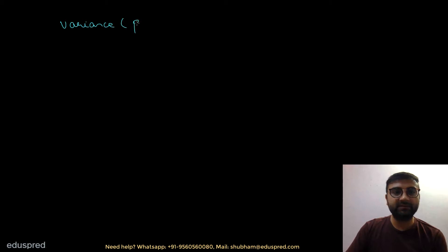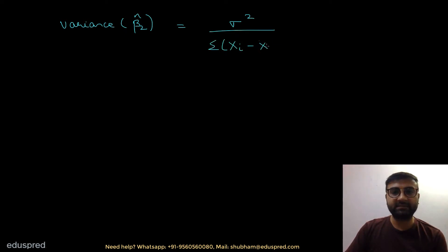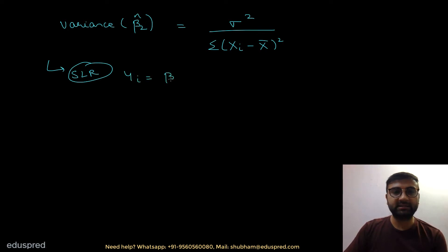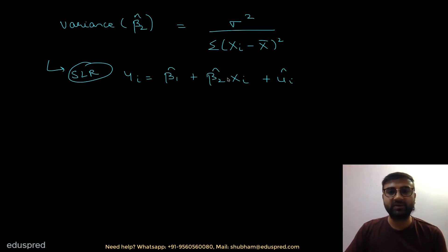In this video, I'm going to talk about the difference between standard deviation and standard error. You must have seen this formula of variance of beta 2 hat: variance of beta 2 hat is equal to sigma square divided by summation of xi minus x bar whole square. This formula is for a simple linear regression model, where yi equals beta 1 hat plus beta 2 hat xi plus ui hat, where ui hat is the sample error, and beta 1 hat and beta 2 hat are the estimators of beta 1 and beta 2 respectively.